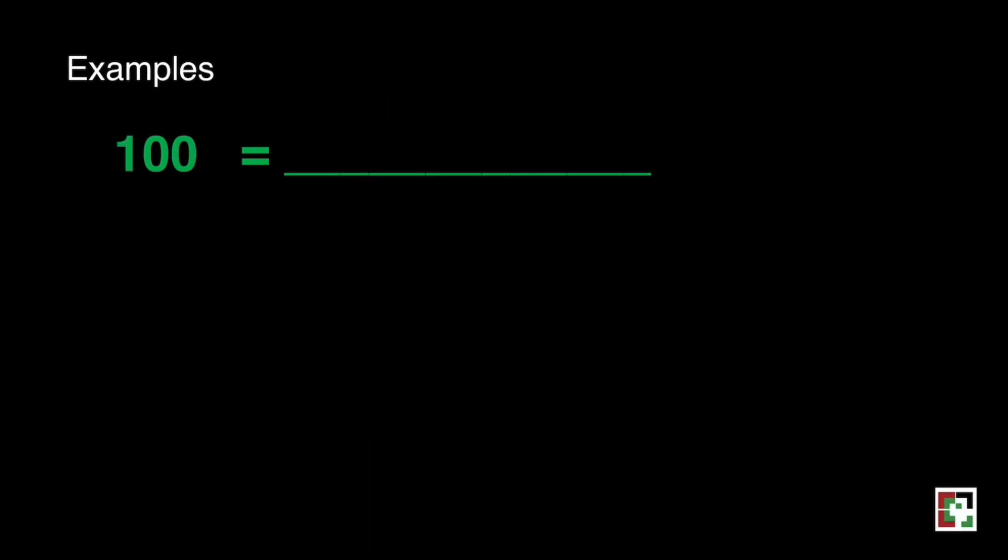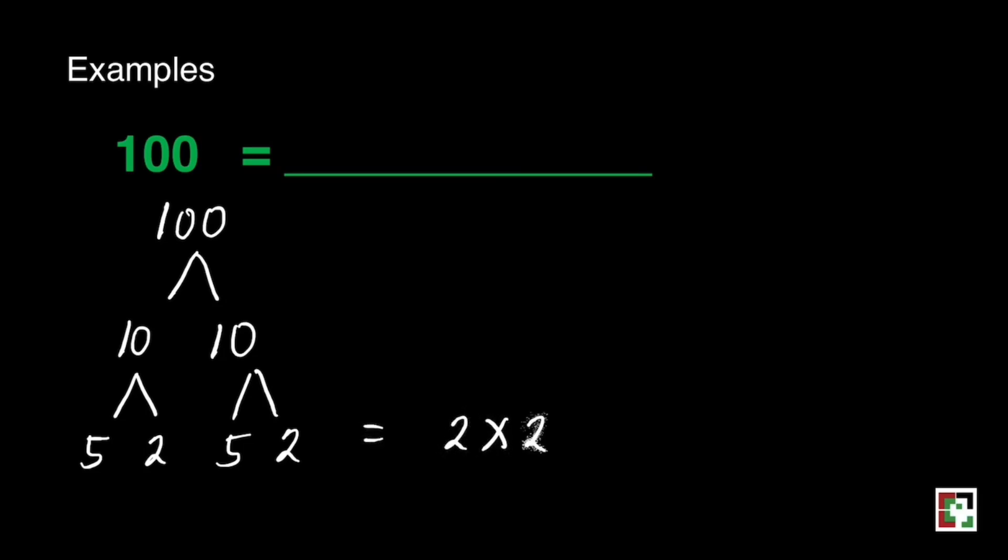That is 100. What are the factors of 100? The easiest way is to write 10 times 10. 10 times 10 is 5 times 2, 5 times 2. We'll rewrite from least to the greatest. We'll have 2 twos and 2 fives. We can rewrite the exponential notation. That's 2 squared times 5 squared. Our final answer is 2 squared times 5 squared.